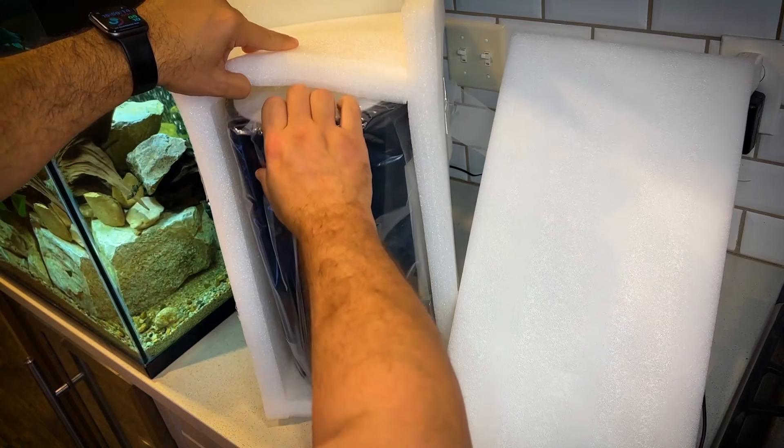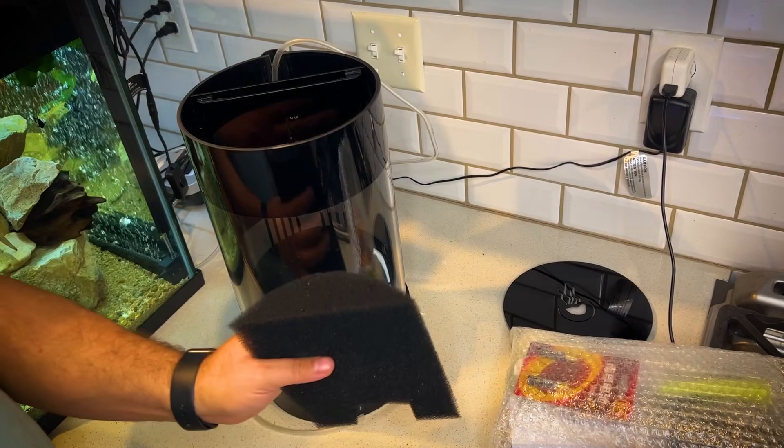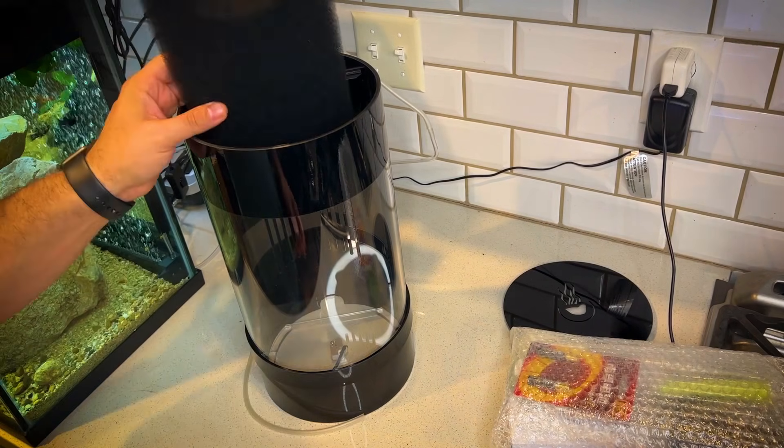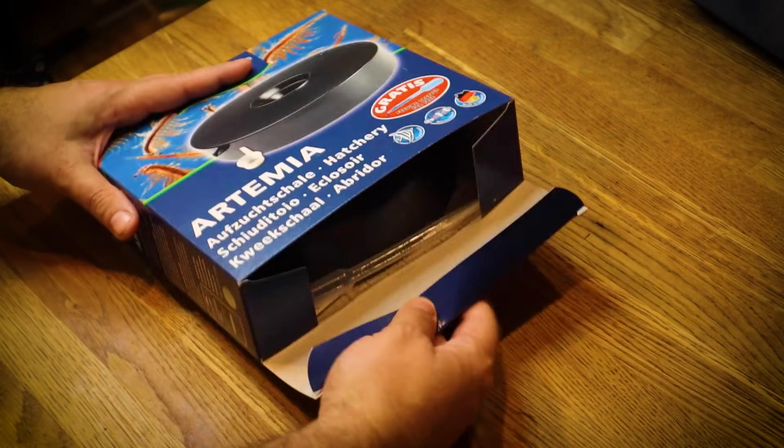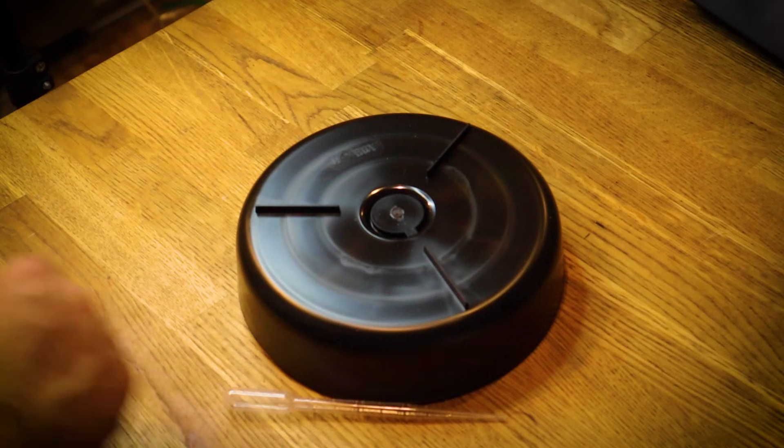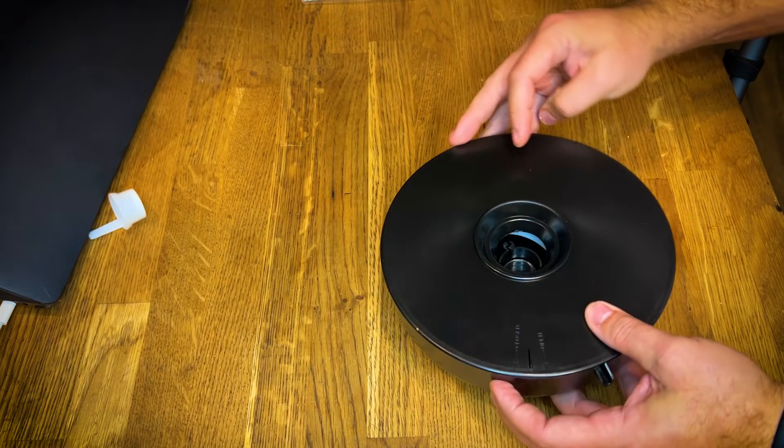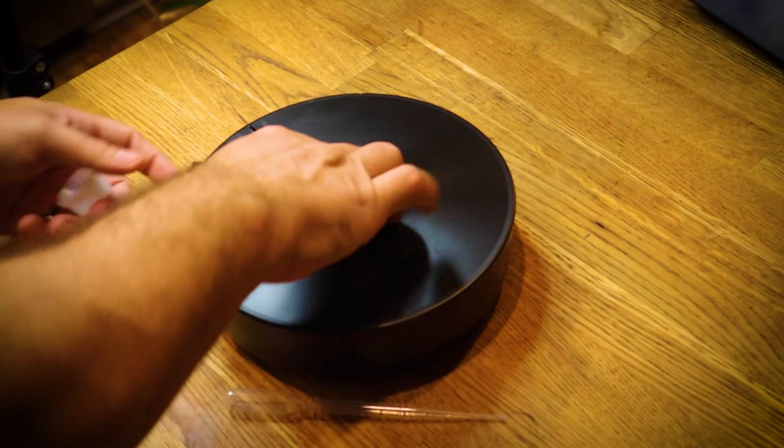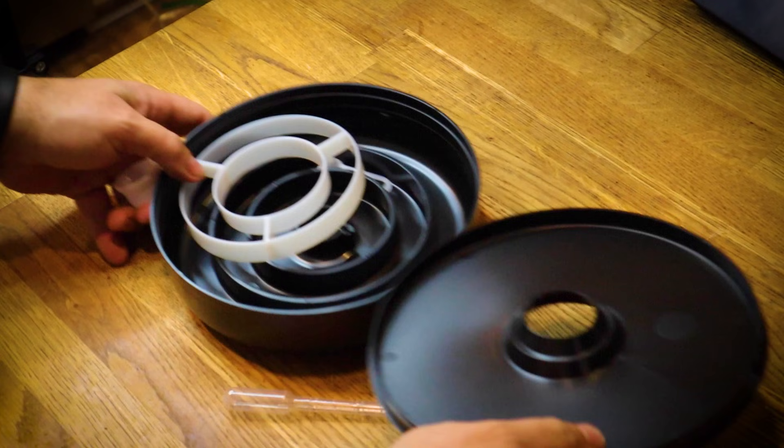So to start off, what we need to do is get some live food. We're going to be hatching some brine shrimp, and this right here is an Artemia hatchery. This particular hatchery, I did a lot of research, and this is by far the most simple.